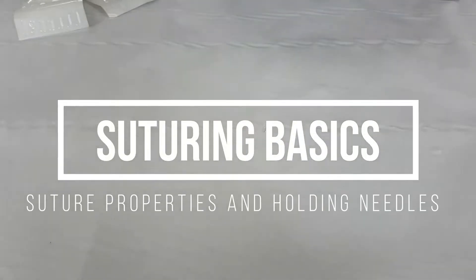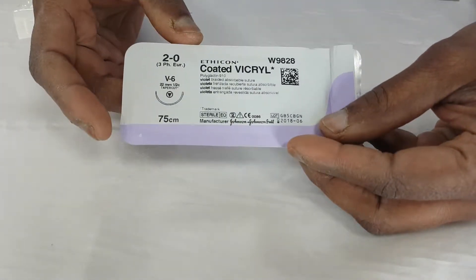So today we're going to have a look at stitches and the different types of stitches that we can get. Some are going to be absorbable, like this stitch called Vicryl.